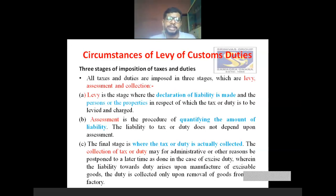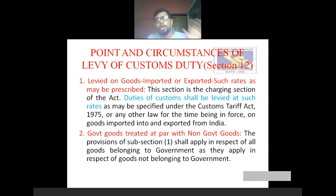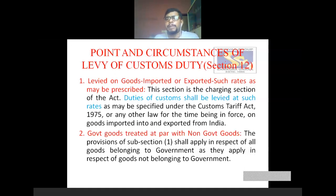So these are the three important stages: levy, assessment, and collection of tax or duty. These are the three important stages of imposition of taxes and duties. Next, continuing with the points and circumstances of levy of custom duty — there are about five to six points covering exactly in which circumstances levy of custom duty is charged. Already I mentioned section 12 mainly talks about the circumstances of levy of custom duty.